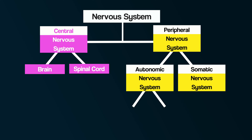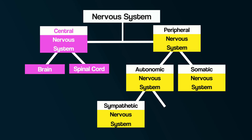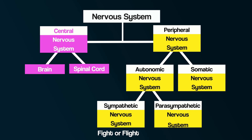Additionally, the autonomic nervous system can be further split into two parts. There's the sympathetic nervous system, also known as the fight or flight response, preparing the body for action. And the parasympathetic nervous system, also known as the rest and digest response, leading the body into a calm state. We'll come back to these two shortly.